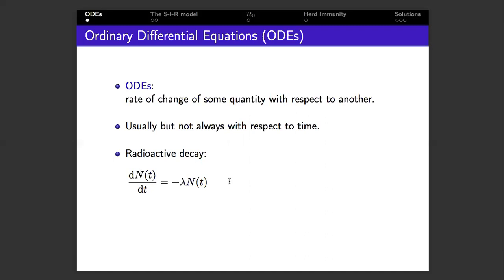Now the solution to this ODE is given by an exponential decay curve. So the number of radioactive nuclei in the sample at time t is given by the initial number multiplied by an exponential factor. This is an exponential decay curve.